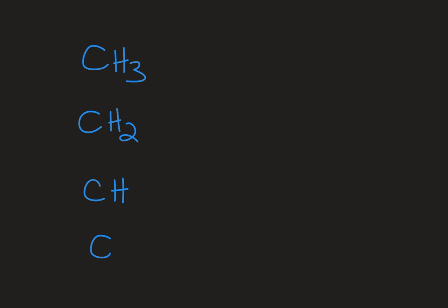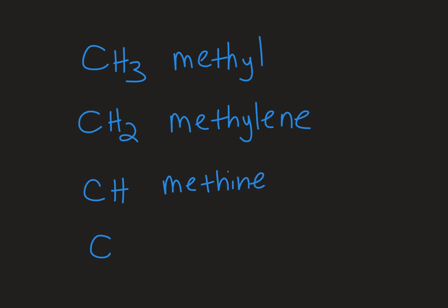When we see a CH3 group, we call that a methyl group. A CH2 group is a methylene. A CH group is a methine. And if we have a carbon that doesn't have any hydrogens on it, so it would have all what we'd call substituents, non-hydrogen atoms on it, we call that a quaternary carbon.